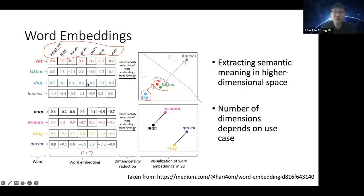The trick in NLP for a long time has been how to generate good word embeddings. If you train them on only one word at a time, the embeddings don't match very well. This is because of a concept called polysemy — one word can have multiple meanings.